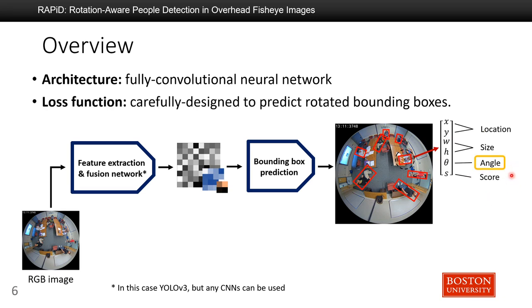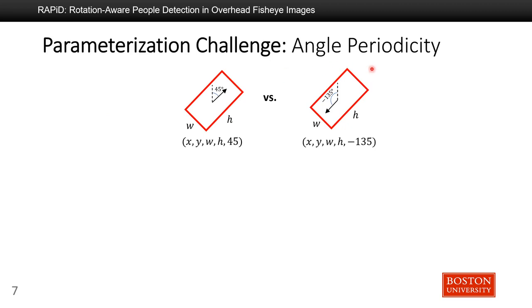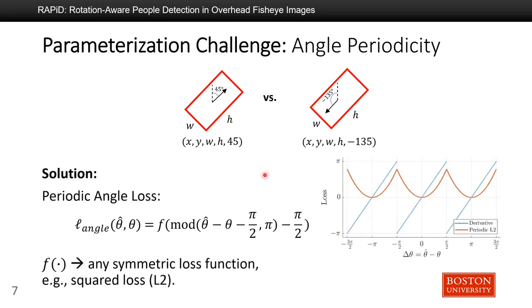In this work, our main focus is the angle regression. We propose a loss function carefully designed to predict rotated bounding boxes. Angle regression is very different from traditional regression since angle is periodic. For example, a predicted angle of 45 degrees and a ground truth of minus 135 degrees have a large numerical difference, but they represent the same bounding box. So we cannot simply use traditional losses such as L1 or L2 loss, as they will penalize correct predictions. To solve this, we propose a periodic angle loss, where f can be any symmetric loss function such as L2 loss. Basically, this formula takes any loss function and makes it pi-periodic.